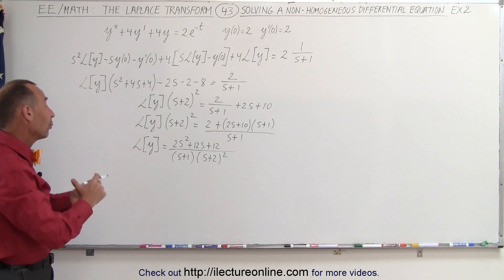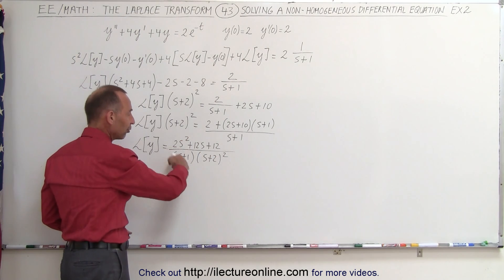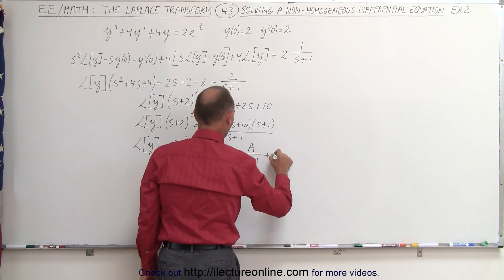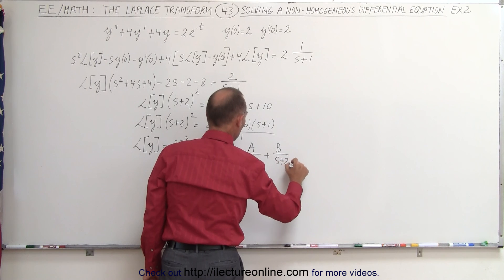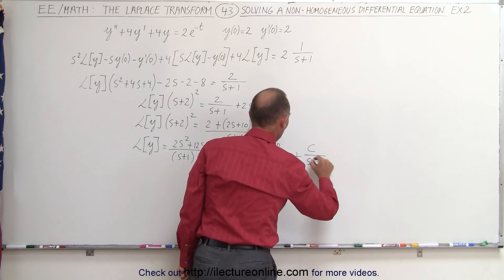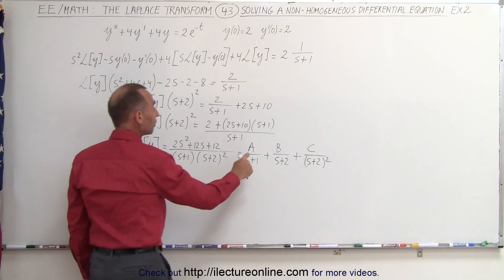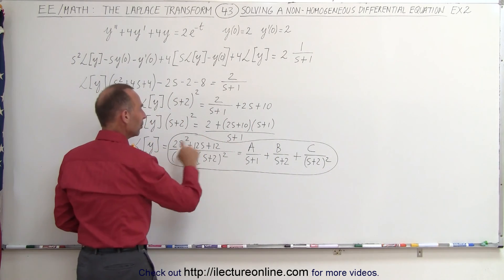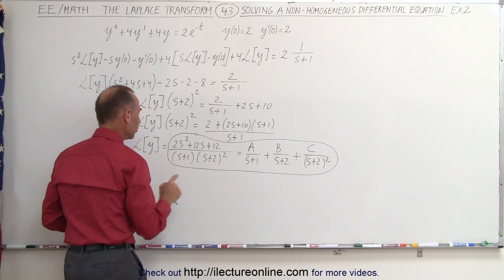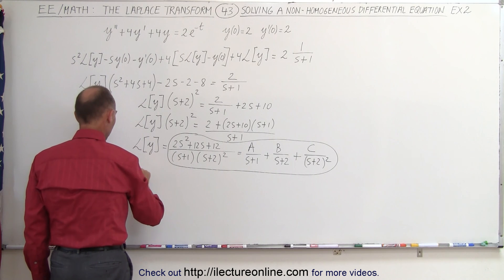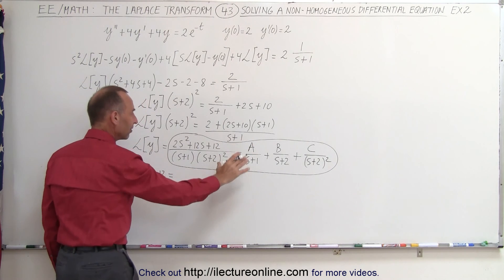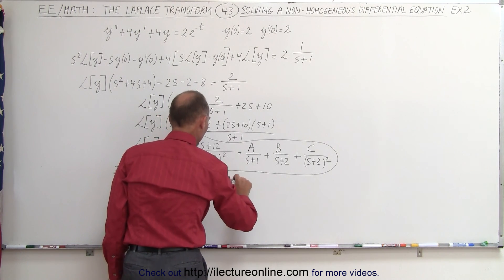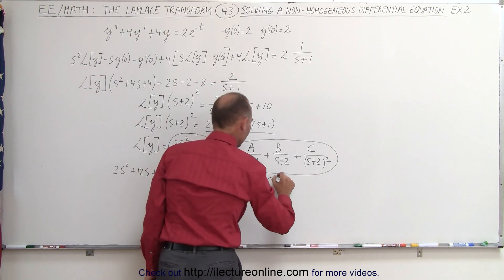Now that we have that, we can write it in terms of partial fractions, because it would be very difficult to take the inverse Laplace transform directly. It can be written as A over s plus 1, plus B over s plus 2, plus C over s plus 2 quantity squared. To solve for A, B, and C, we multiply both sides by the full denominator, giving us 2s squared plus 12s plus 12 equals A times s plus 2 squared, plus B times s plus 1 times s plus 2, plus C times s plus 1.